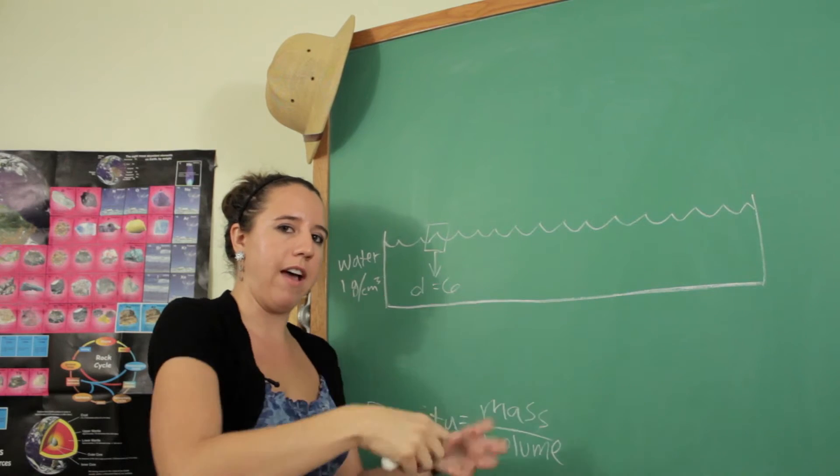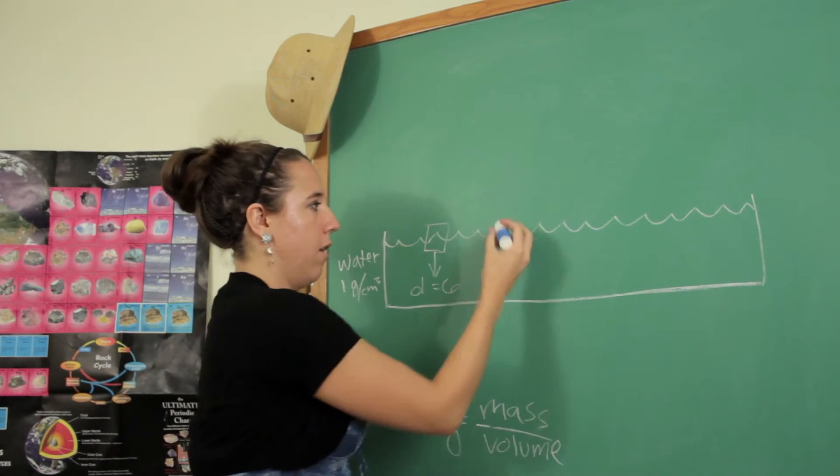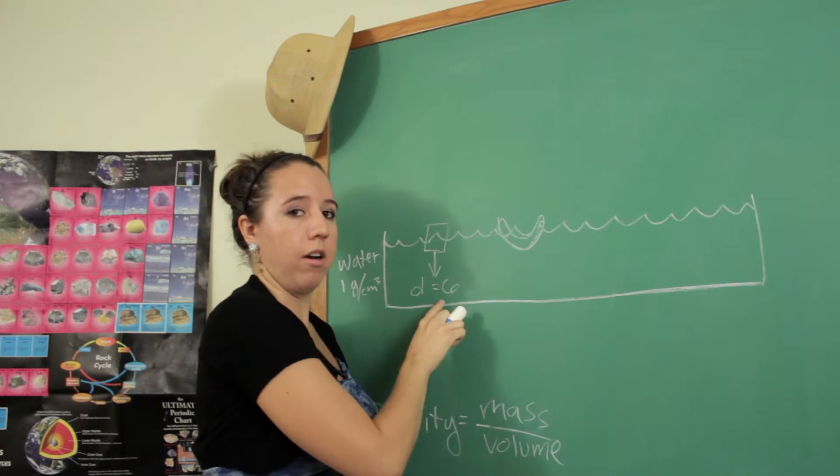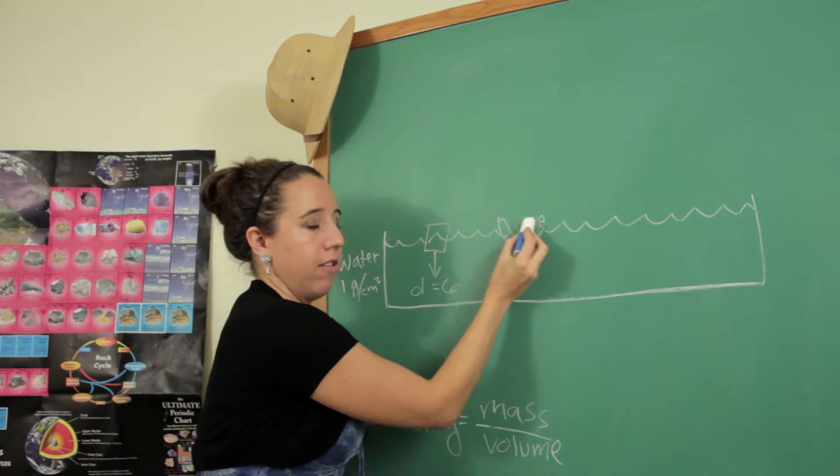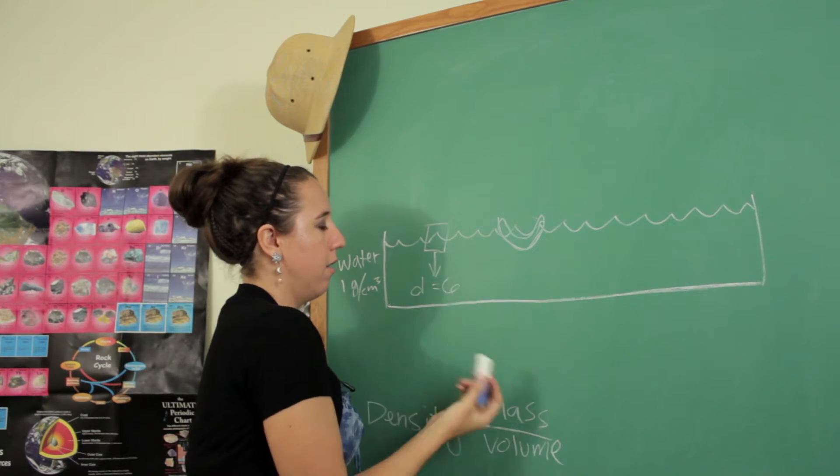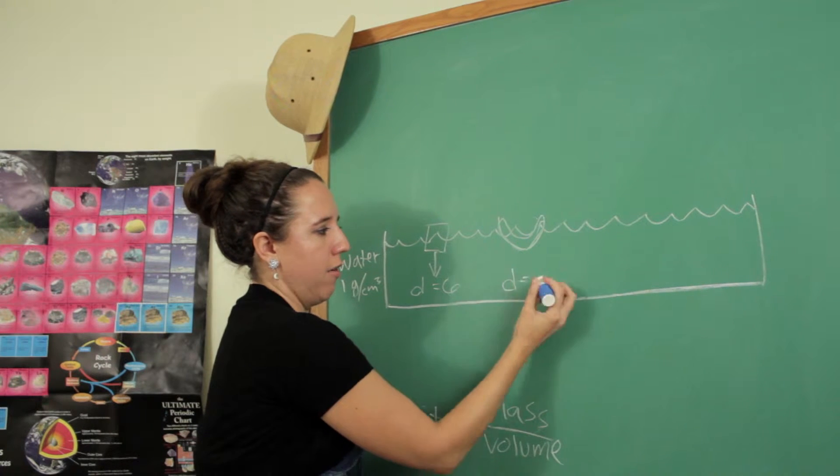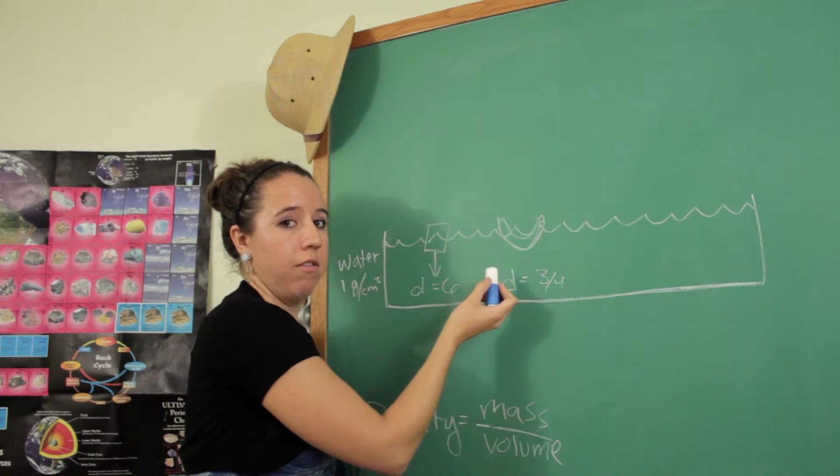So let's say that we mold that somehow so that it kind of has a bowl shape. So we're going to do something like this, sort of. So this is no longer six, because now we have to take into account the air that's inside of this little pocket. So let's say that it's three fourths. So that means that it will float.